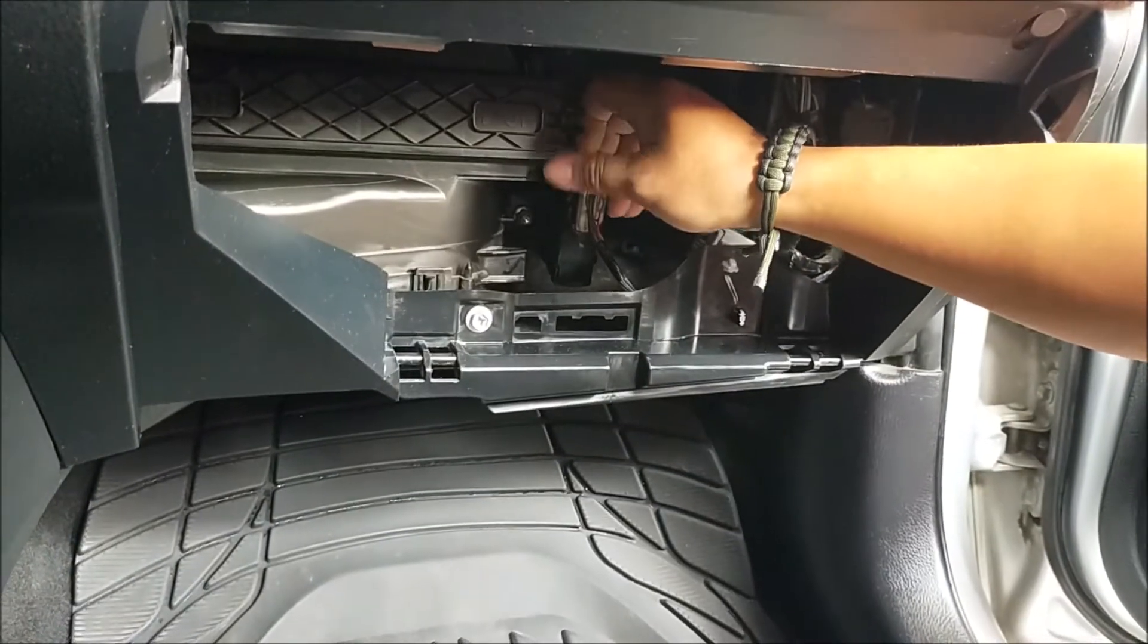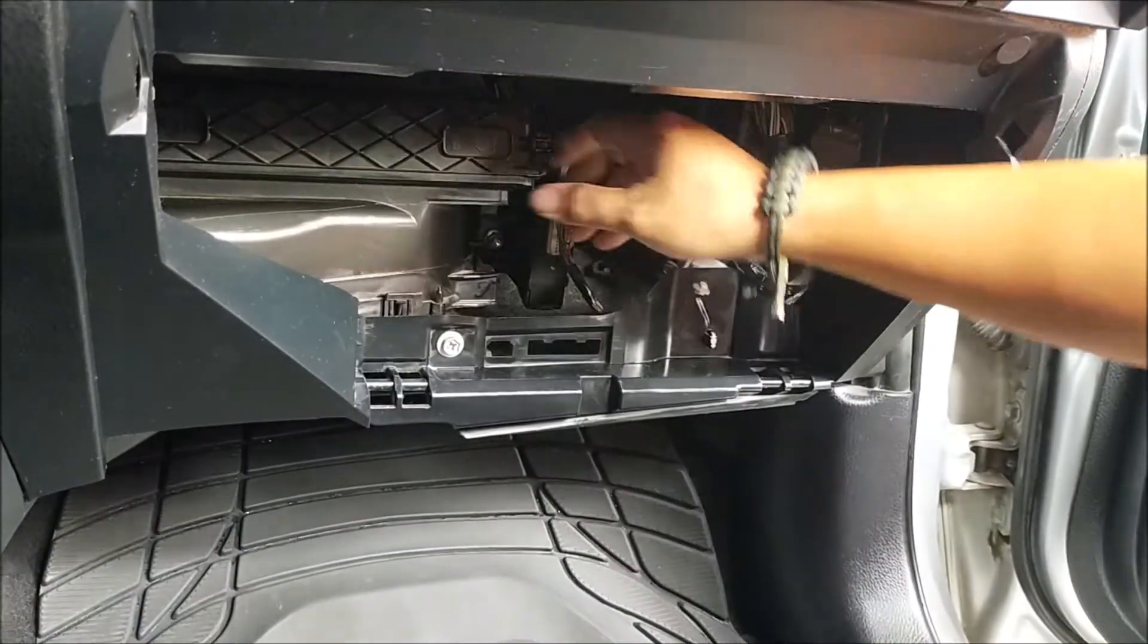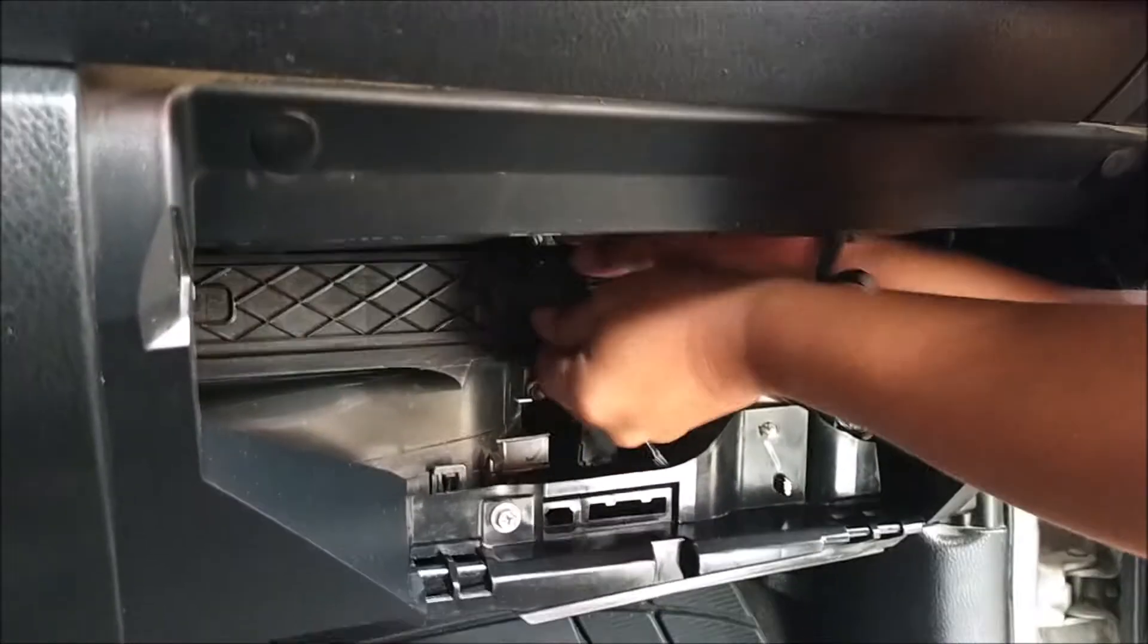This is our cabin air filter box. This is where the filter is located. All you have to do is open up this cover right here. You'll notice that it has a logo that says 'up.' I will discuss more about that later on.